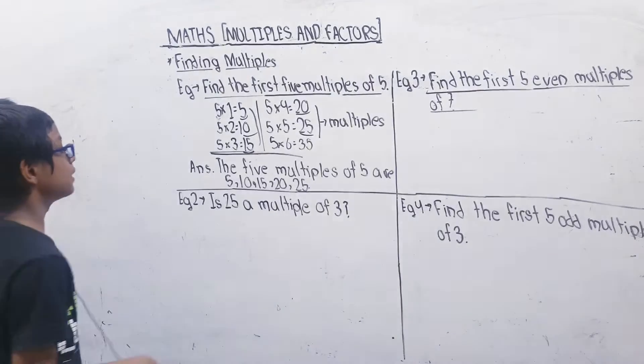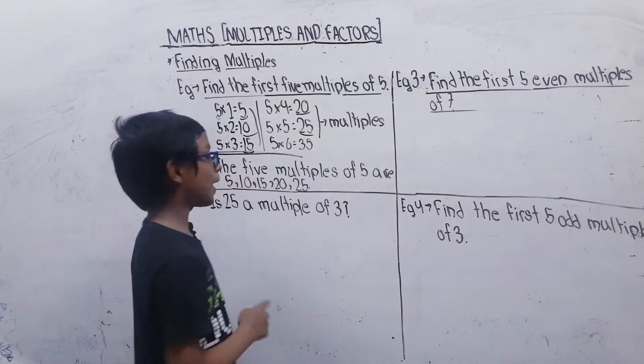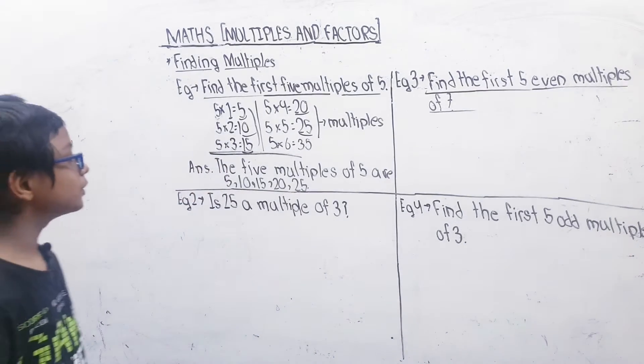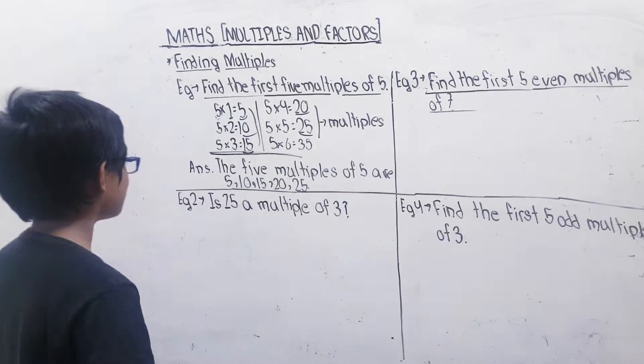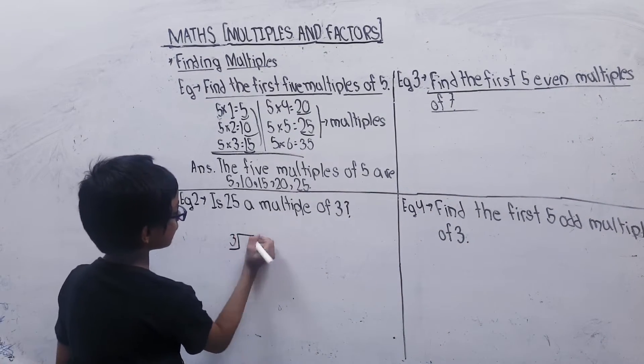Let's see one more example. Is 25 a multiple of 3? In this we have to find if it is a multiple or not. If we want to find that, then we will divide it. 3 divided into 25.